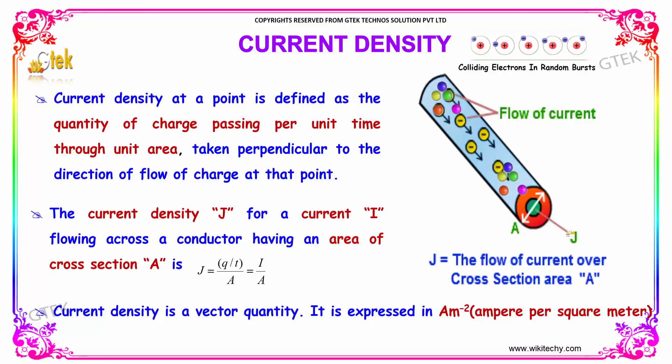The current density J for a current I flowing through a conductor having an area of cross-section A is given by J is equal to Q by T divided by A, where I equal to Q by T, so I divided by A.